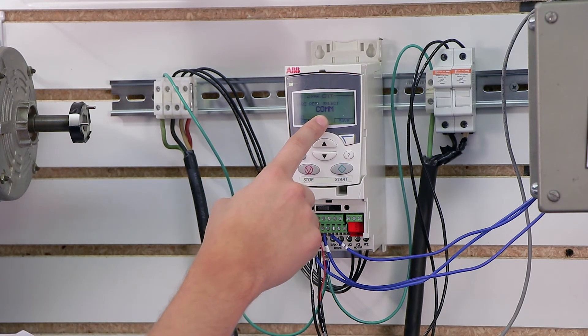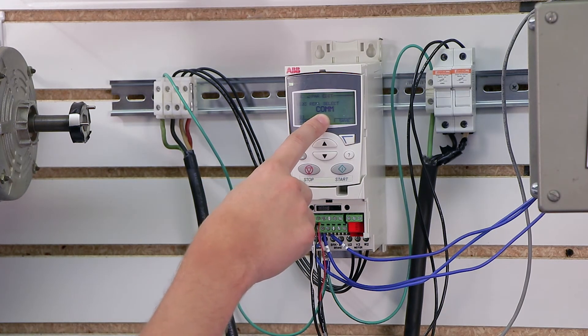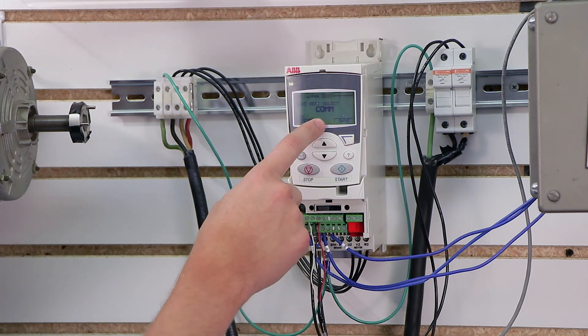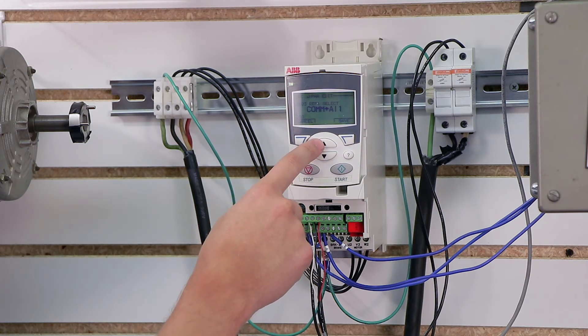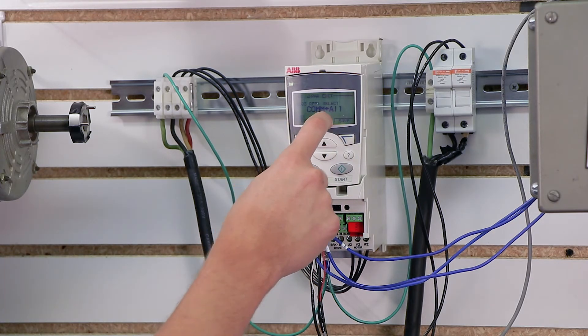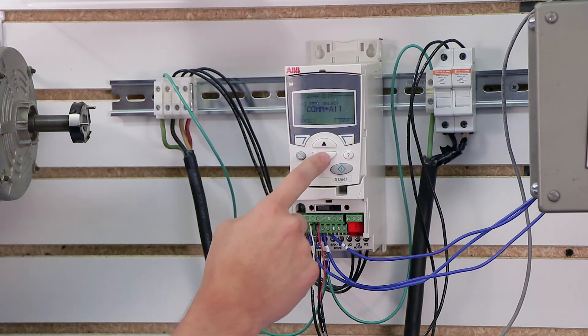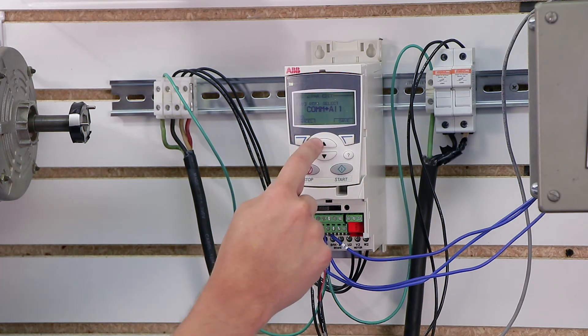COM is actually communication. So if you have some kind of external communications card connected with this drive, maybe you have PROFIBUS, DeviceNet, Ethernet, this will let you actually send the speed command through that network. You can actually use a combination which is your communication plus analog input 1. This lets you add a trim. So you want to trim a speed with an external speed reference.